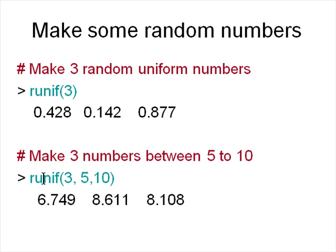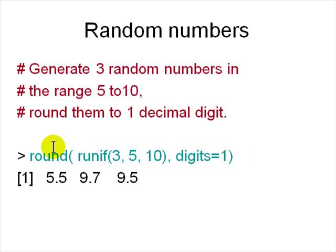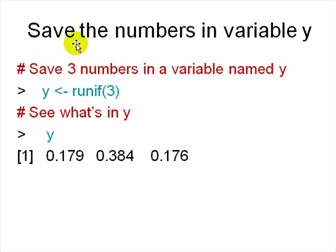R has lots of random number generators built in. 'runif(3)' generates three uniformly distributed random numbers. If you want them between 5 and 10, type 'runif(3, min=5, max=10)'. To generate random numbers in a range with one decimal place, wrap it in 'round(..., digits=1)' and you get three rounded random numbers.